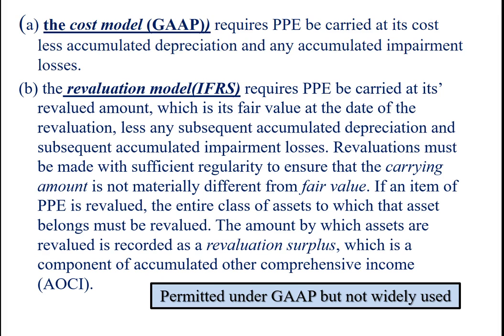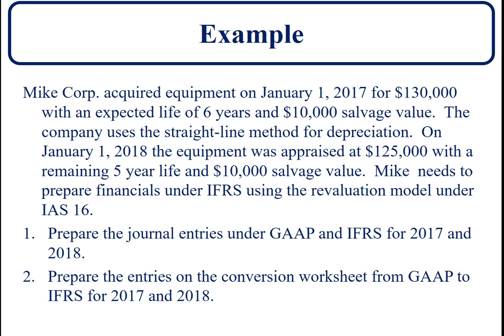Now we're going to look at an example. In our example, my corporation buys a piece of equipment on January 1st, 2017. He pays $130,000 for it, and it has an expected life of six years and an estimated salvage value of $10,000. The company uses straight-line depreciation, and on January 1st, 2018, the equipment was appraised at $125,000, with a remaining five-year life and still a $10,000 salvage value. Mike needs to prepare financials under the international standard using the revaluation model required under IAS 16.